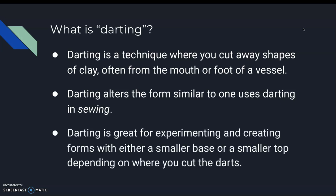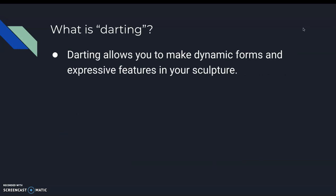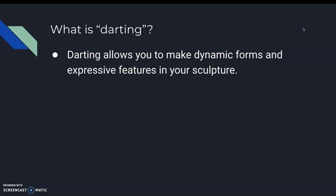Darting is a great way for experimenting and creating forms with either a smaller base or a smaller top, depending on where you cut the darts. So it basically alters the form. Darting allows you to make dynamic forms and expressive features in your sculpture, and you're going to have some choices of the type of darting method that you get to use.